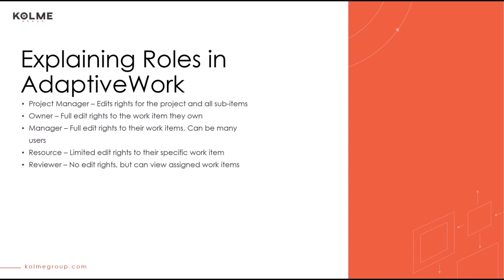Project Managers have editor rights to the project and all of its sub-items. They are also the only project role that can approve timesheets, assuming system setting 13.13 is enabled. Owners can be set at the project or individual work item level — for example, you could have separate owners of each task within a project. Those owners will have editor rights on the items they have ownership of. If an owner isn't assigned, it will default to the project manager.